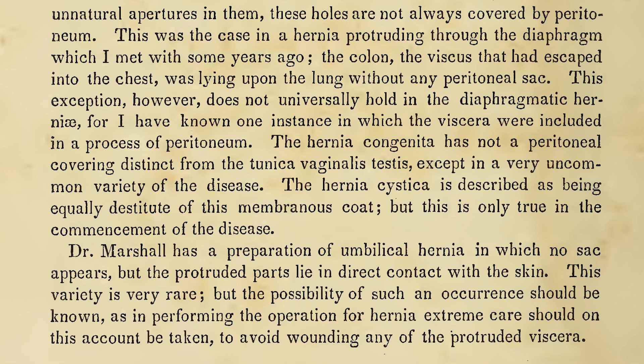The hernia congenita has not a peritoneal covering distinct from the tunica vaginalis testis, except in a very uncommon variety of the disease. The hernia cystica is described as being equally destitute of this membranous coat, but this is only true in the commencement of the disease. Dr. Marshall has a preparation of umbilical hernia in which no sac appears, but the protruded parts lie in direct contact with the skin. This variety is very rare, but the possibility of such an occurrence should be known, as in performing the operation for hernia, extreme care should on this account be taken, to avoid wounding any of the protruded viscera.